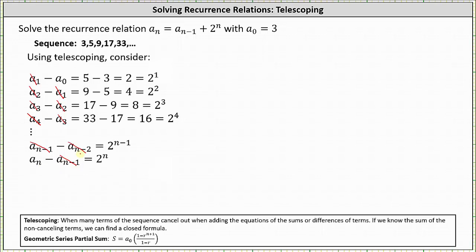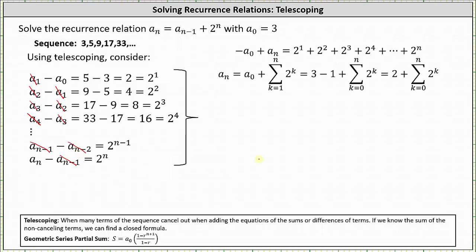On the right, notice we have a sum of powers of two. So we're left with negative a_0 plus a_n equals two to the first plus two squared plus two cubed, all the way out to two to the power of n. Solving for a_n, we add a_0 to both sides, giving us a_n equals a_0 plus the sum from k equals one to n of two to the power of k. To express this as a geometric series starting at k equals zero — since two to the zero is one, we are adding one to the sum and must subtract one to maintain equality.